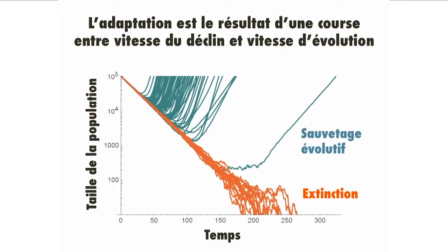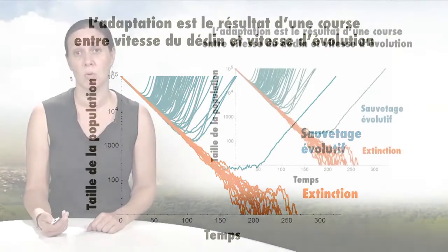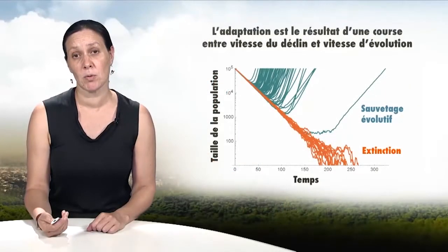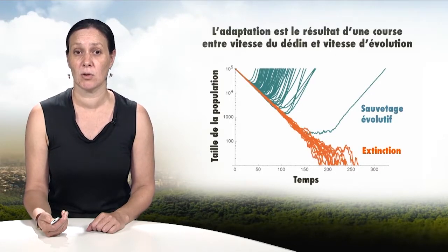This is the simulated trajectory of a thousand populations initially in decline. The blue populations show cases where adaptation was fast enough to evolve within the stressful environment after a period of initial decline. However, a large number of populations became extinct before they were able to evolve and adapt. We can see that the simple existence of genetic variants adapted to new environments is insufficient to ensure the long-term survival of a given population.